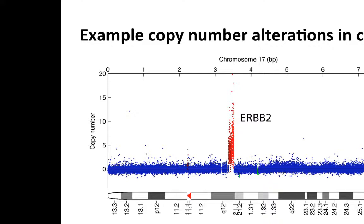This is what a single tumor looks like. Often you'll see pictures like this when studying copy number changes. Shown is the karyogram, with chromosomal banding pattern on the x-axis, megabases across the genome, and the y-axis showing the estimated number of copies at each locus. Each dot is a probe on the Affymetrix SNP6 array — still probably the most used platform for copy number change measurement.